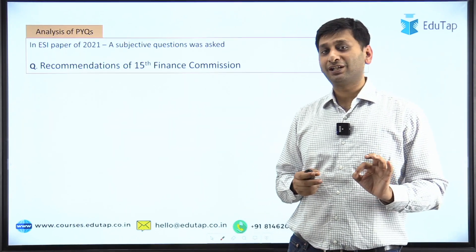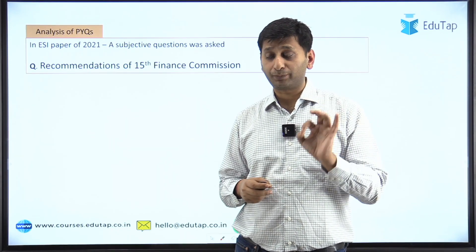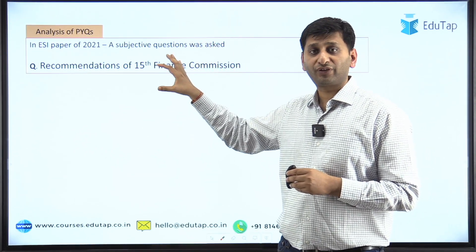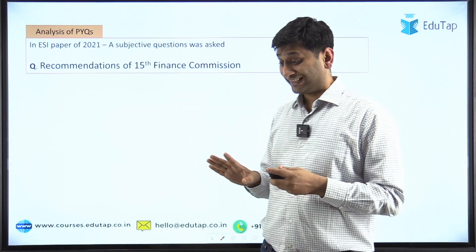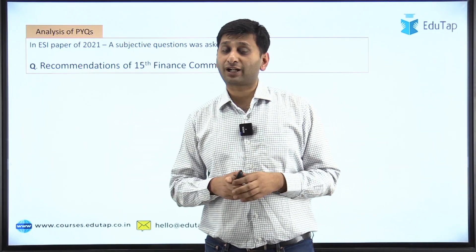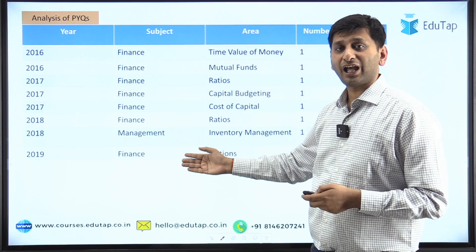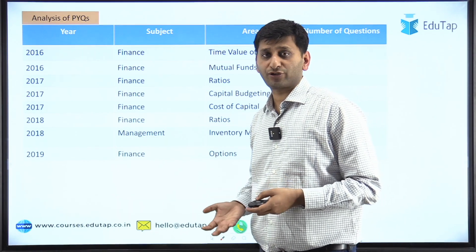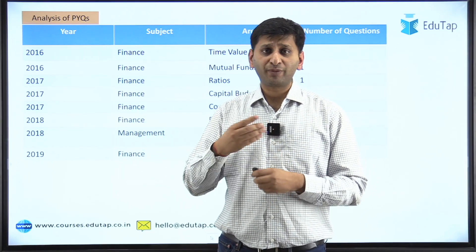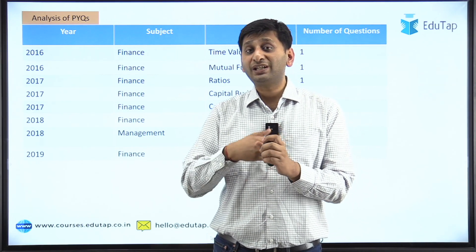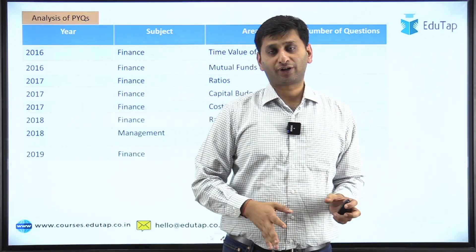Ironically in 2021 there were no questions out of the syllabus in FM objective, ESI objective, or FM descriptive — only that one ESI descriptive question could be considered out of syllabus. So in 2021 there was essentially nothing out of syllabus, which makes me believe there will be some surprises next year. That has been the tendency — so many years they have been asking questions out of the syllabus. When the pattern becomes predictable, the only way to surprise candidates is to put questions not directly from the listed syllabus topics.